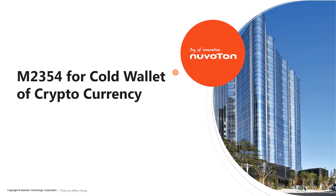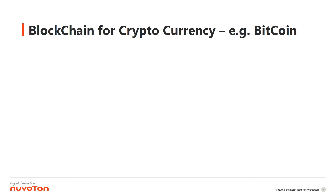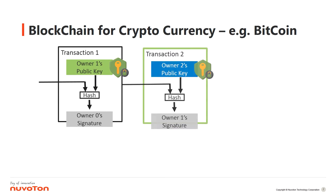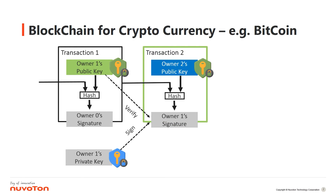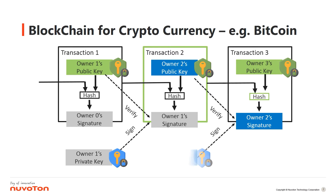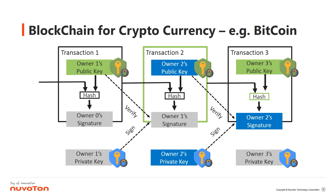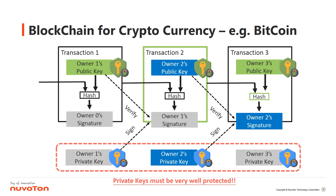Here we start from blockchain theory for cryptocurrency using the Bitcoin example. In Transaction 2, it will need owner 2's public key and Transaction 1's block information together to build a signature of owner 1's, to be a part of the Transaction 2 block. This owner 1's signature is signed by owner 1's private key and can be verified by owner 1's public key. The private keys of users need to be protected, otherwise all the transactions may be faked by hackers.